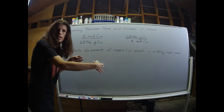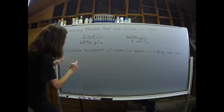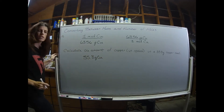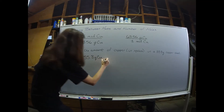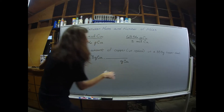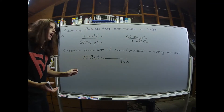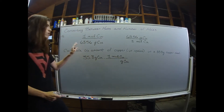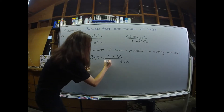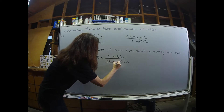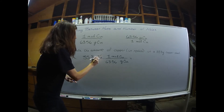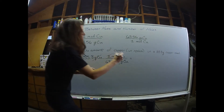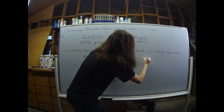Setting this up is going to look the same as setting up any other dimensional analysis problem. I'm going to start with what they gave me — we have a 35.8 gram copper sheet. So we're always going to use labels, and I need to get rid of grams. I'll put grams of copper in the denominator, and they ask us to calculate the amount of copper in moles, so in my numerator I'm going to have one mole of copper. Grams of copper will cancel grams of copper, leaving me with moles of copper. The answer is 0.563 moles of copper.